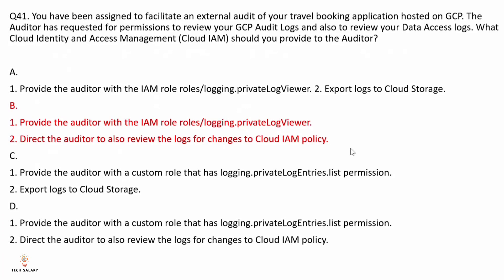Option B: provide the auditor with the IAM role roles/logging.privateLogViewer and direct the auditor to also review the logs for changes to Cloud IAM policy. This is correct because the private log viewer role is required to view data access logs, and the logs can be accessed from the logs console. It provides private log viewing and directs the auditor to review IAM policy change logs.